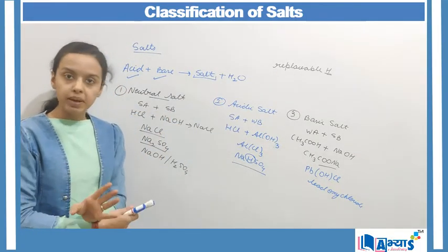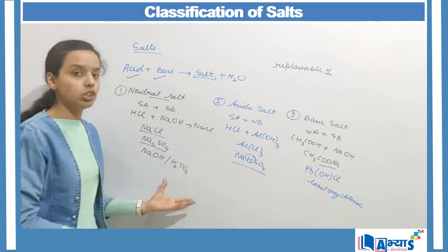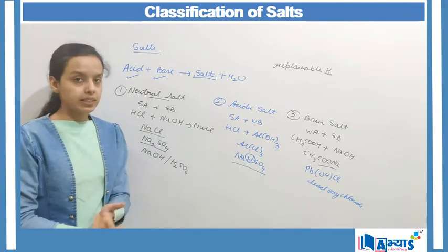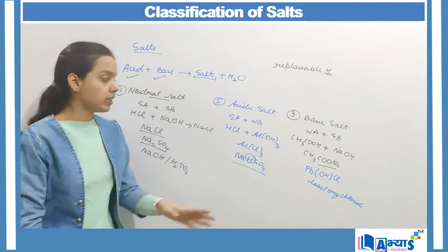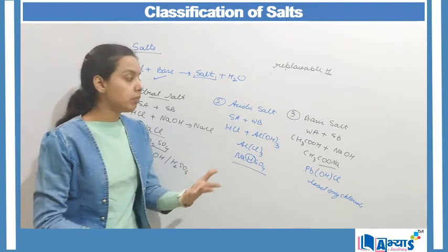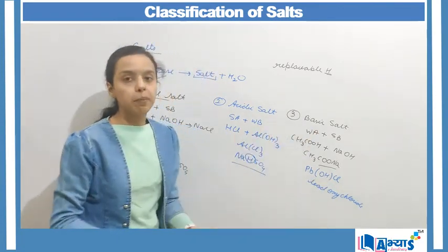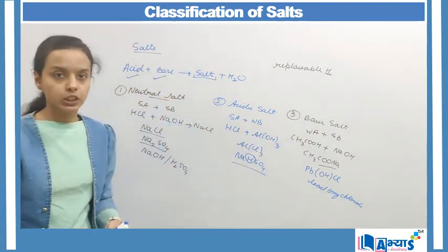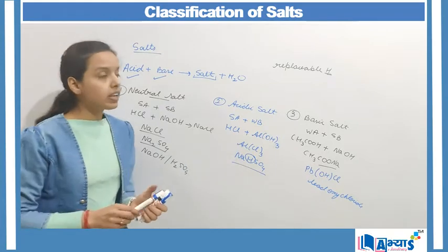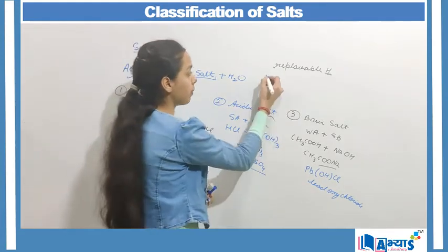If there is no replaceable hydrogen left, it becomes a neutral salt. If there is replaceable hydrogen left, it becomes an acidic salt. If there is a replaceable hydroxyl ion, it becomes a basic salt. There is one more category of salts — that is the double salt.